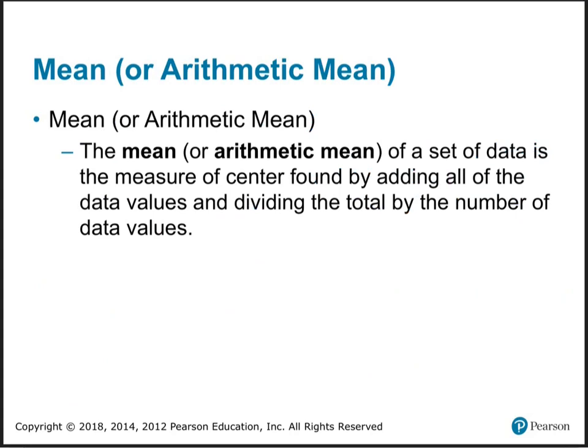There are three ways to get the average. The one you're most familiar with, the one most typically used, is called the mean. That's where you just add them up — adding all the data values and dividing by the total number of data values. That's the most typical way we find the average: just add them up and divide. That's called the mean.